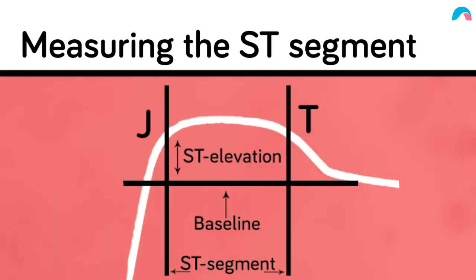You need to find the J point and then measure the distance between the baseline and the J point. If that distance is more than two little blocks in the precordial leads, in other words two millimeters, or more than one little block in the limb leads, in other words one millimeter, then we say the ST segment is elevated.